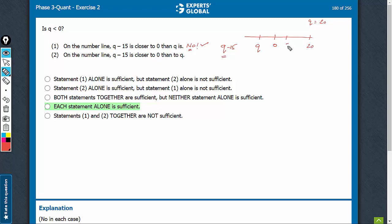q minus 15 would be 5. So see, q minus 15 is closer to 0 than q is.